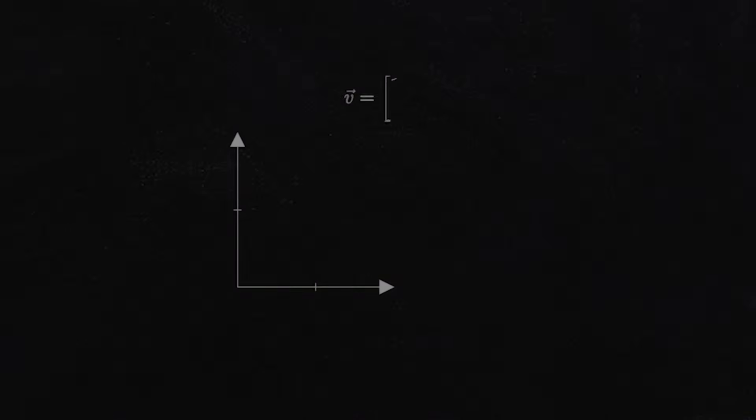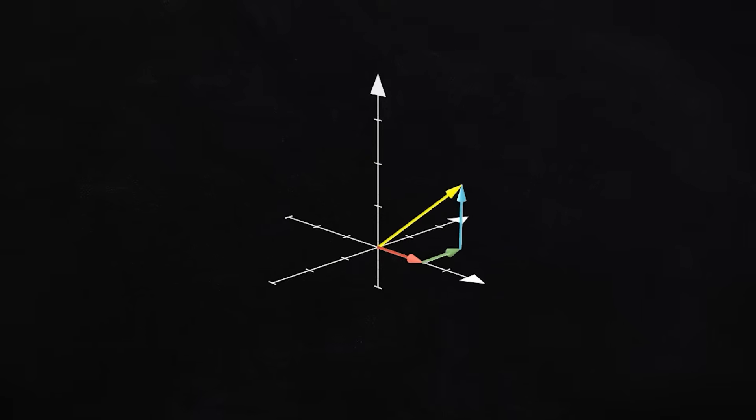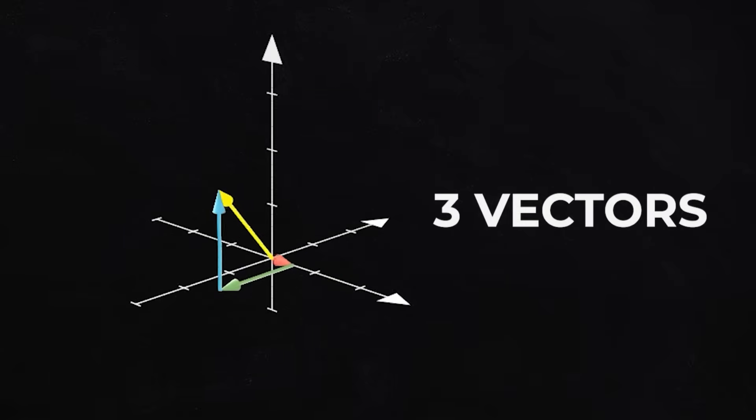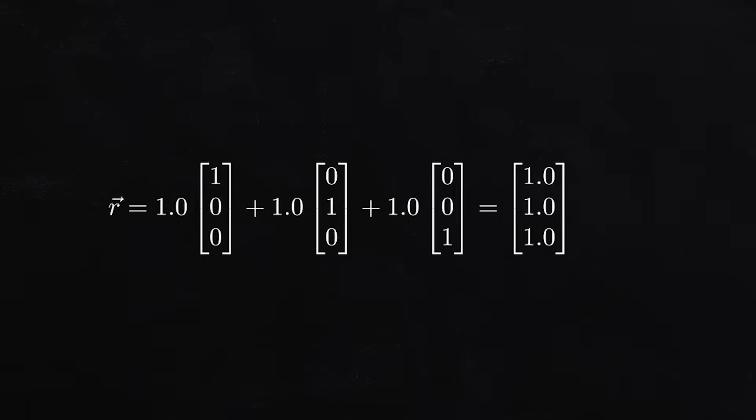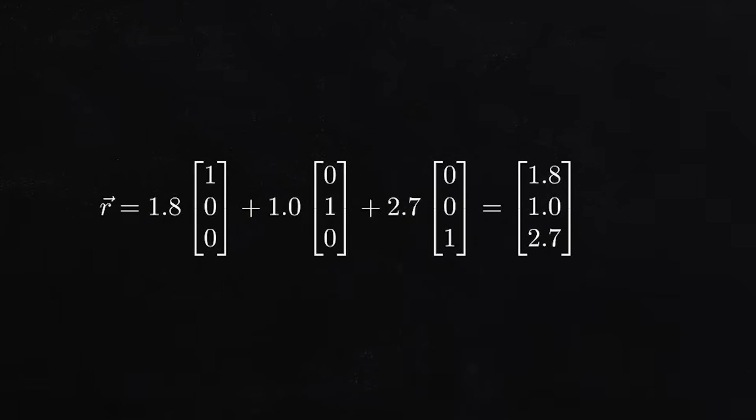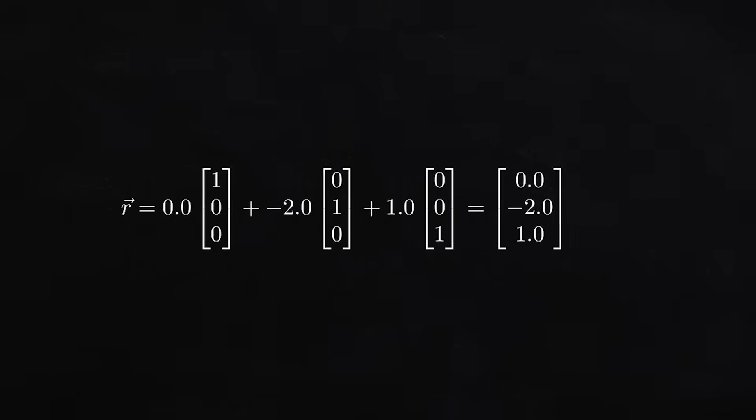An important concept here is a basis. A basis is the minimum possible set of vectors necessary to span a vector space. For example, the basis for the vector space of all possible positions in three dimensions is just three vectors, one along the x, y, and z axes each. By adding together specific combinations of these three vectors, it's possible to reach any point in the observable universe in 3D space.